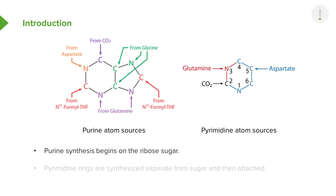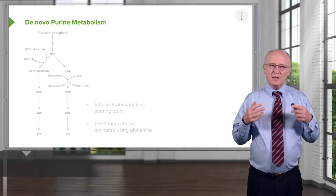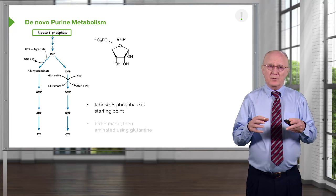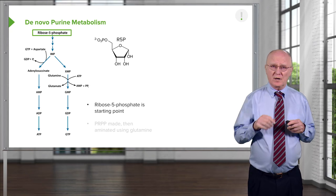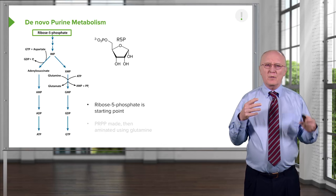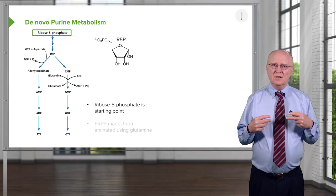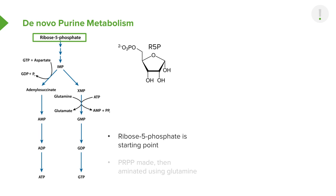Purine synthesis is different from pyrimidine synthesis in that purine synthesis begins with the ring being assembled on the ribose sugar. Pyrimidine synthesis, on the other hand, synthesizes the ring first and then attaches it to the sugar later. As we study nucleotide metabolism, we can look at it from a bigger picture or zoom in on individual reactions. For the most part, I will use the zoomed-out version, because the important message is how the overall process happens and how the balance of purine and pyrimidine nucleotides is maintained.